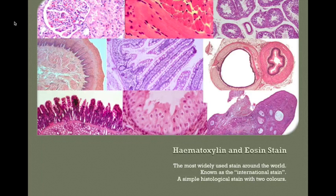To finish off this first resource: the hematoxylin and eosin stain — H&E — is a widely used stain around the world. It's a simple stain with two colours. In our next screencast we'll look at the H&E stain in more detail.